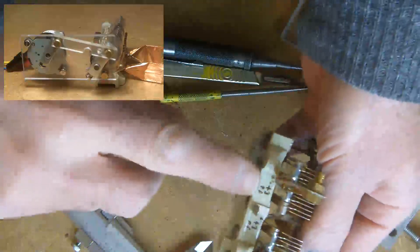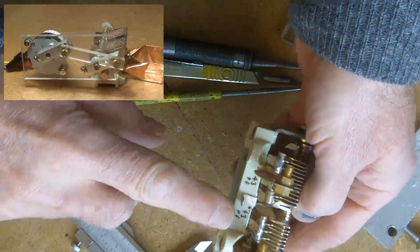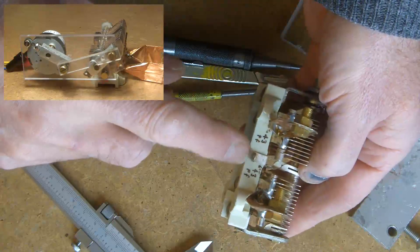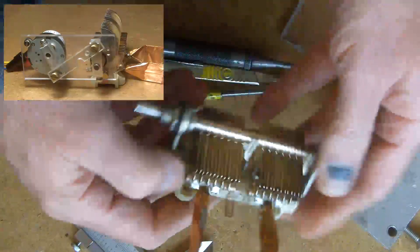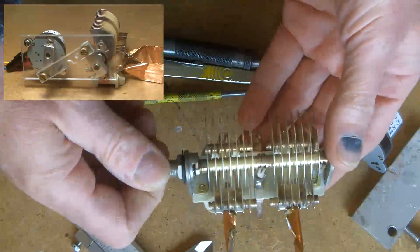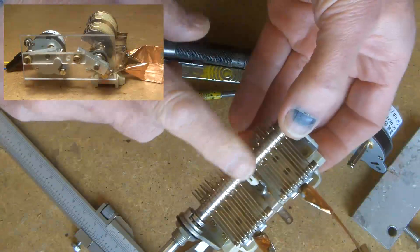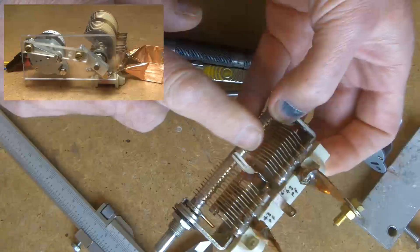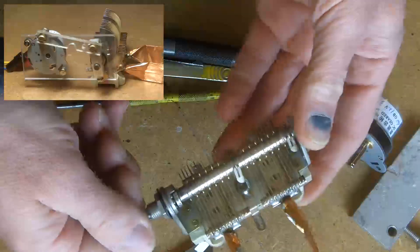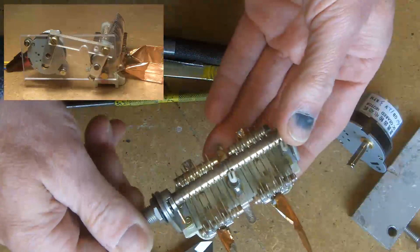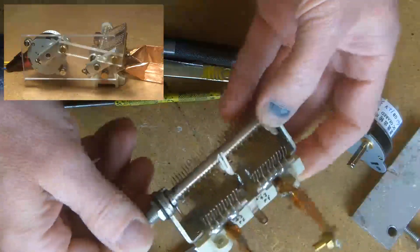This is 2 x 43 picofarads and so I use those 2 in series for 21.5 picofarads total. And there's a high voltage on the capacitor of the loop antenna, quite surprisingly high. I can't remember what it is off hand but it's going to be over a thousand volts.